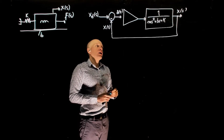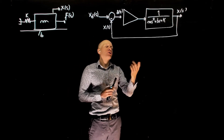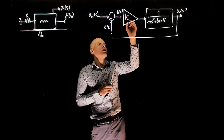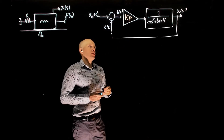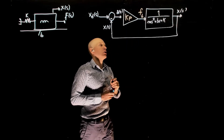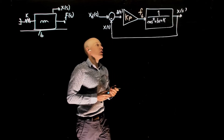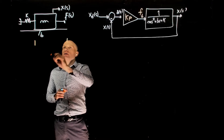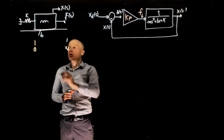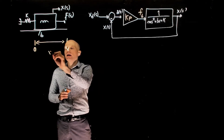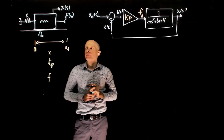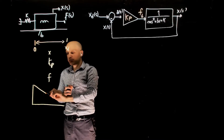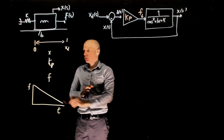Our control strategy is to apply a force to the mass that is proportional to the difference between xd and x, with proportionality constant kp. The force coming out of this block is applied to the mass, and the mass moves by x(s). This is like commanding the mass to go from position zero to xd — the distance times kp gives the force f. The force is very high at the beginning, and as the mass approaches xd, the force decreases.